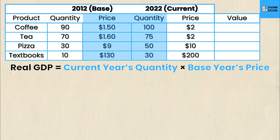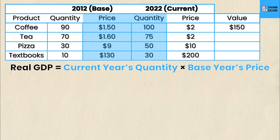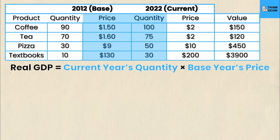To calculate each value, I multiply the base year price by the current year quantity. For coffee: $1.50 times 100 equals $150. For tea: $1.60 times 75 is $120. For pizza: $9 times 50 gives $450. And for textbooks: $130 times 30 gives $3,900.